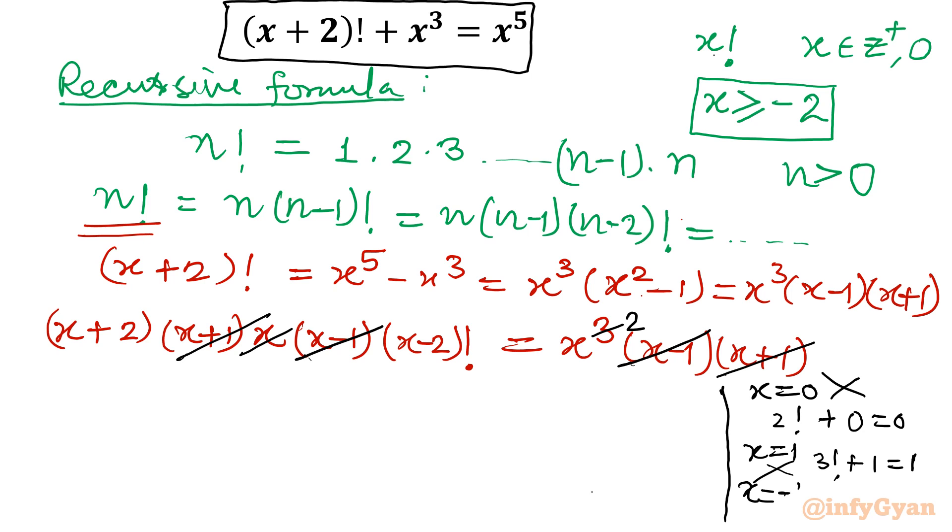x is equal to minus 1. So I will write 1 factorial. Minus 1 cubed minus 1 equal to minus 1 to the power 5 minus 1. 1 factorial is 1, so LHS is 0, RHS is minus 1. So this is also not satisfying the original equation. That means we can divide this equation by those factors. So what is left? x plus 2 times x minus 2 factorial equal to x squared.